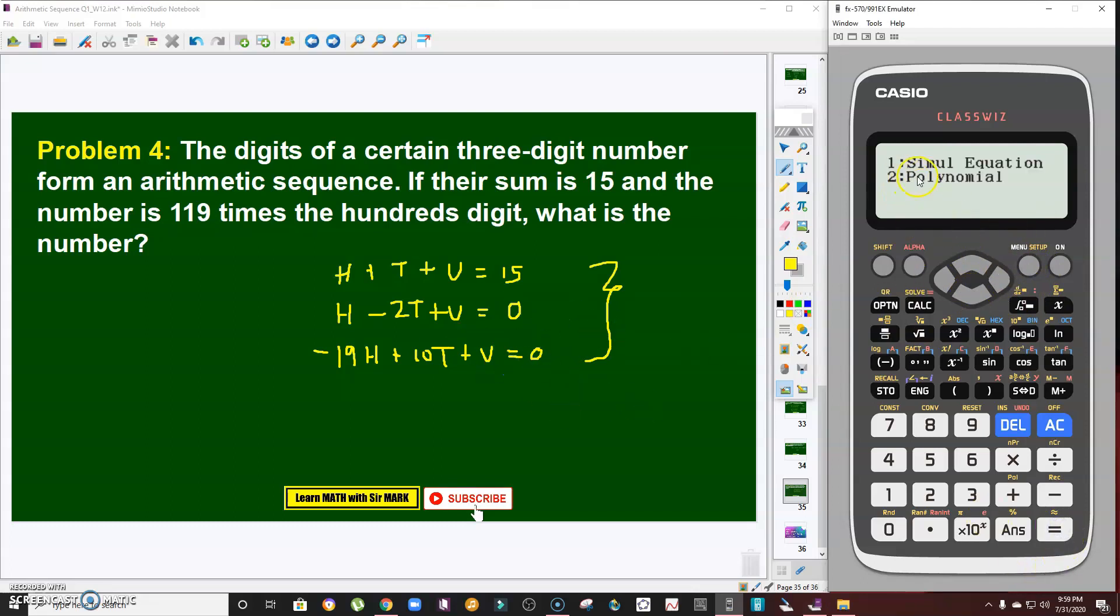Since it's 3 equations with 3 variables, go to the equation mode, then simultaneous equation. It will ask you how many unknowns. Since it's 3 equations, 3 unknowns, just press 3. Then just enter the coefficients and the constant. That is 1, 1, 1, 15. So 1 enter, 1 enter, 1 enter, and then the constant is 15. That's it. That's pretty simple. Then for the second equation, that would be 1, -2, 1, and then 0. And lastly for the third equation, this is -19, 10, and then 1, then this one is 0.